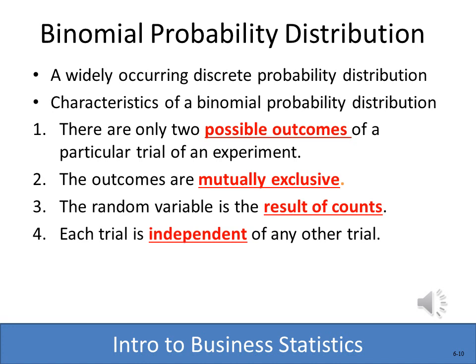Now we're going to introduce the concept of a binomial probability distribution. With a binomial distribution, there are only two possible outcomes: pass or fail, buy a car or not buy a car, heads or tails. Each of the outcomes are mutually exclusive and each trial is independent.